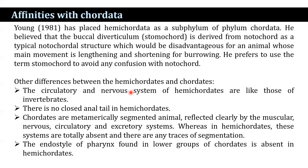The endostyle and pharynx found in lower groups of chordates is absent in Hemichordata. In some books it is still placed under phylum Chordata. Basically, Urochordata, Cephalochordata, and Hemichordata are known as protochordates.